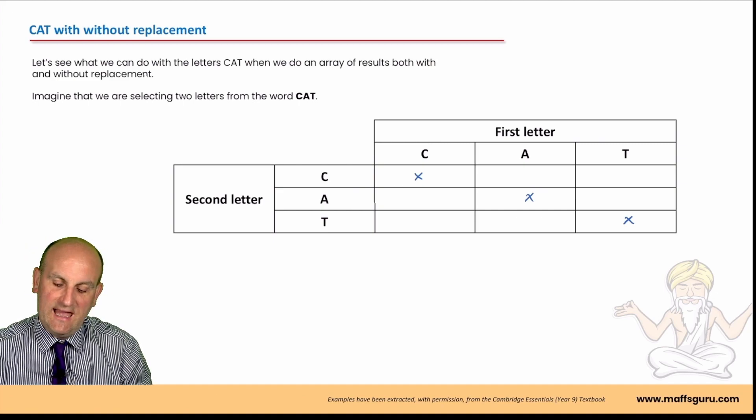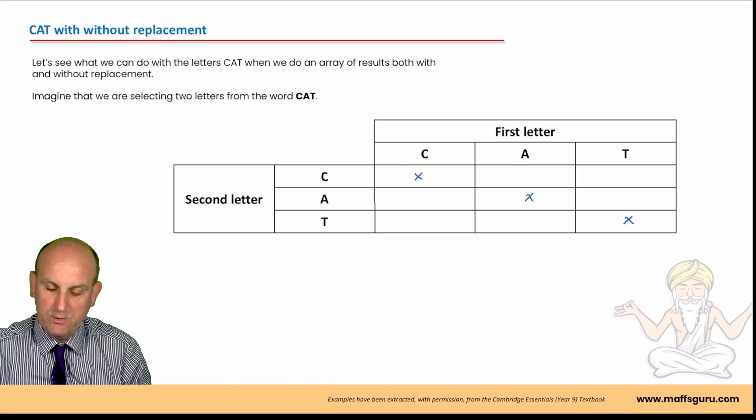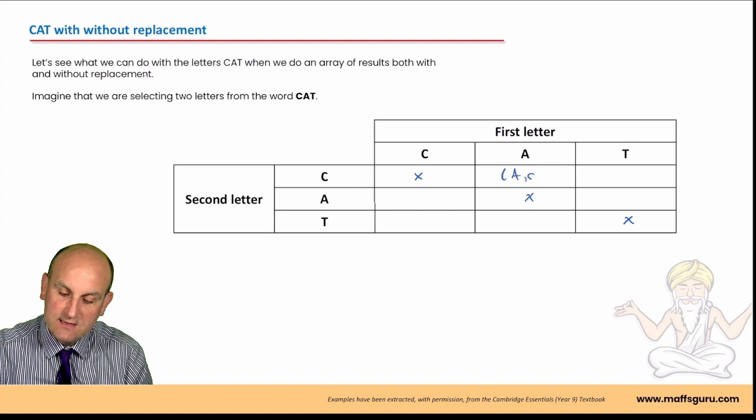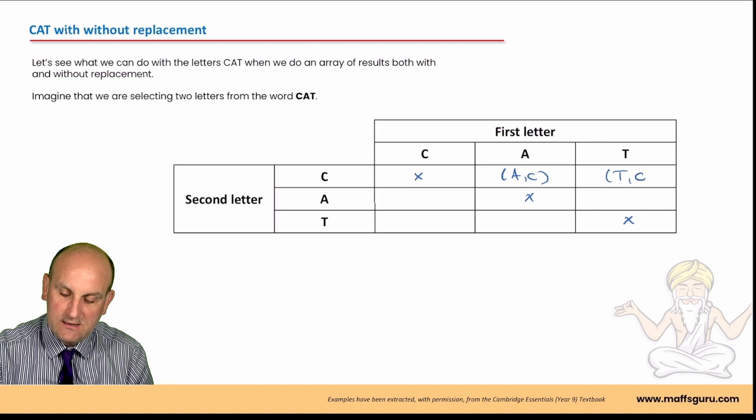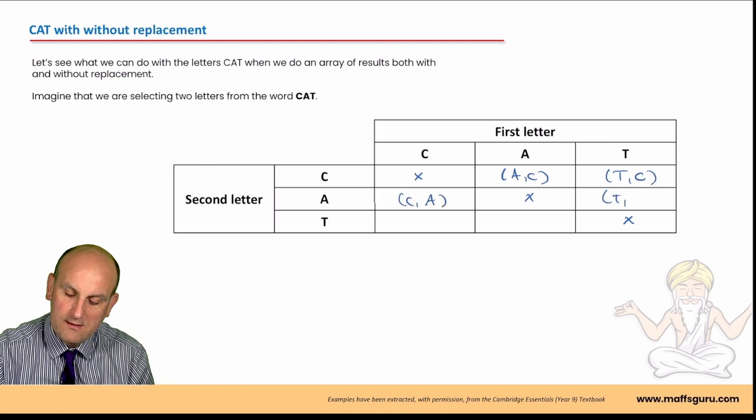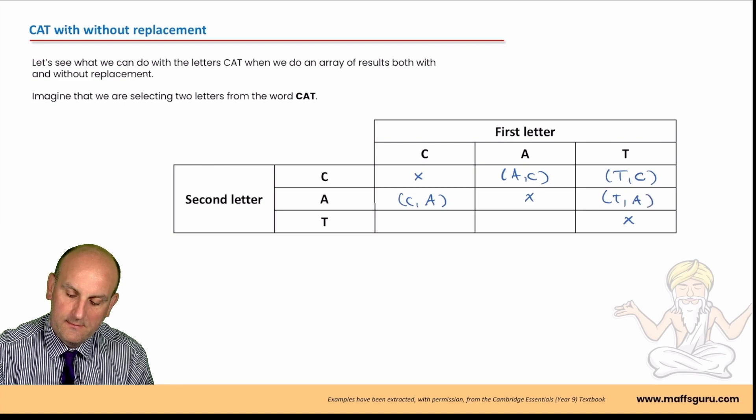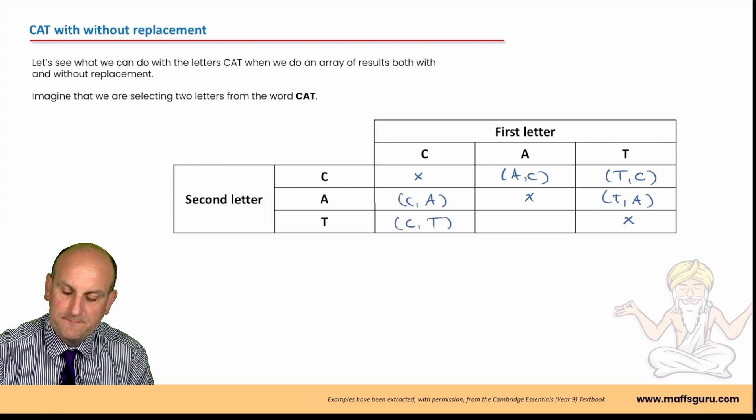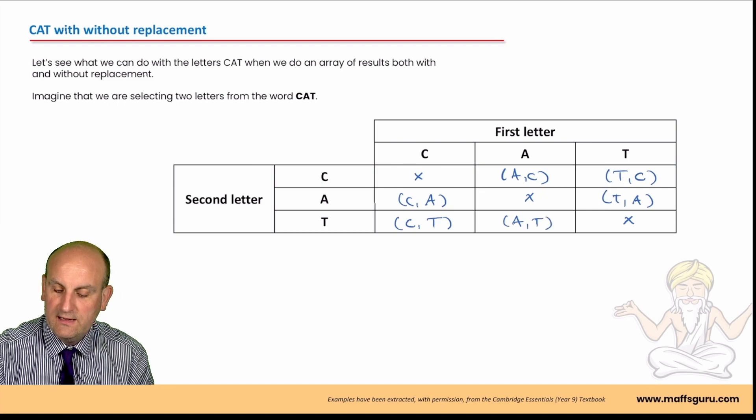So, is it possible then to get A followed by C? Oh yes. Because those letters are in play in that bag. That's going to be T comma C, C comma A, T comma A, C comma T and A comma T.